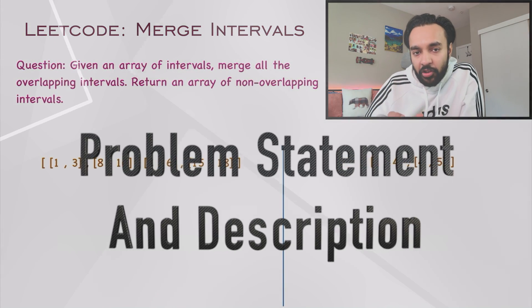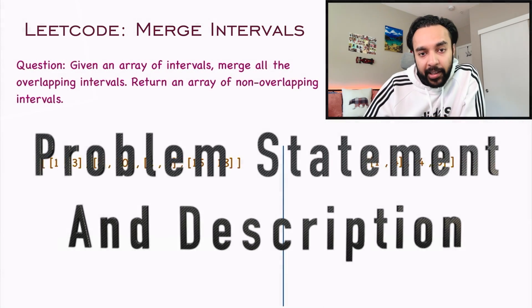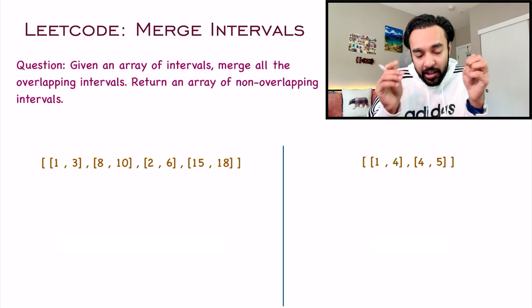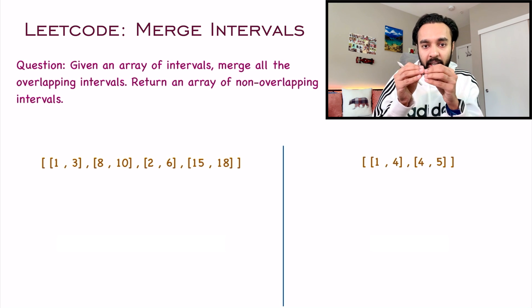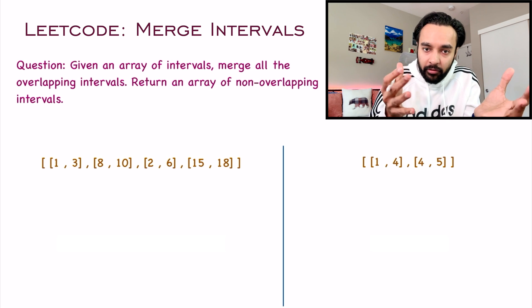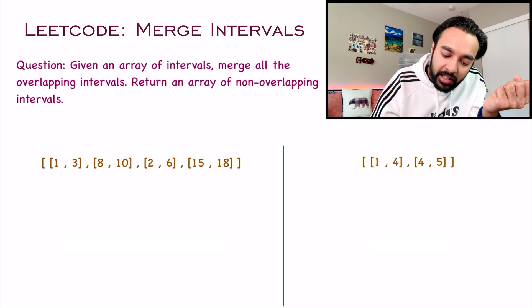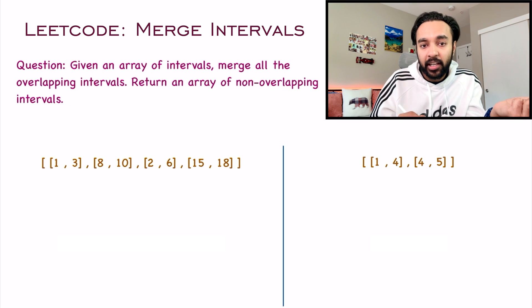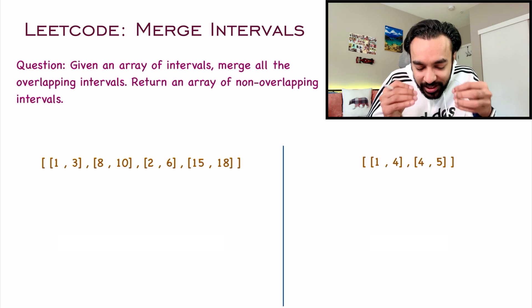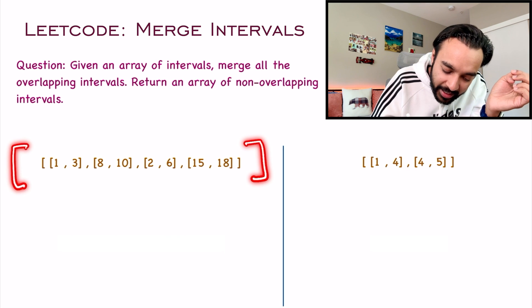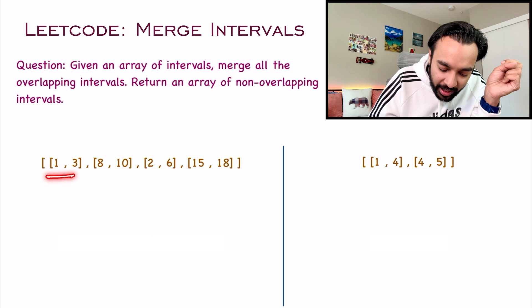Let's make sure that we are understanding the problem statement correctly. In this problem, you are given an array that has some intervals and you have to merge all the overlapping intervals. And once you're done merging, you have to return an array that has all the non-overlapping intervals. Let us try to understand it with our first test case. You can see that I have an array and it has all of these intervals.